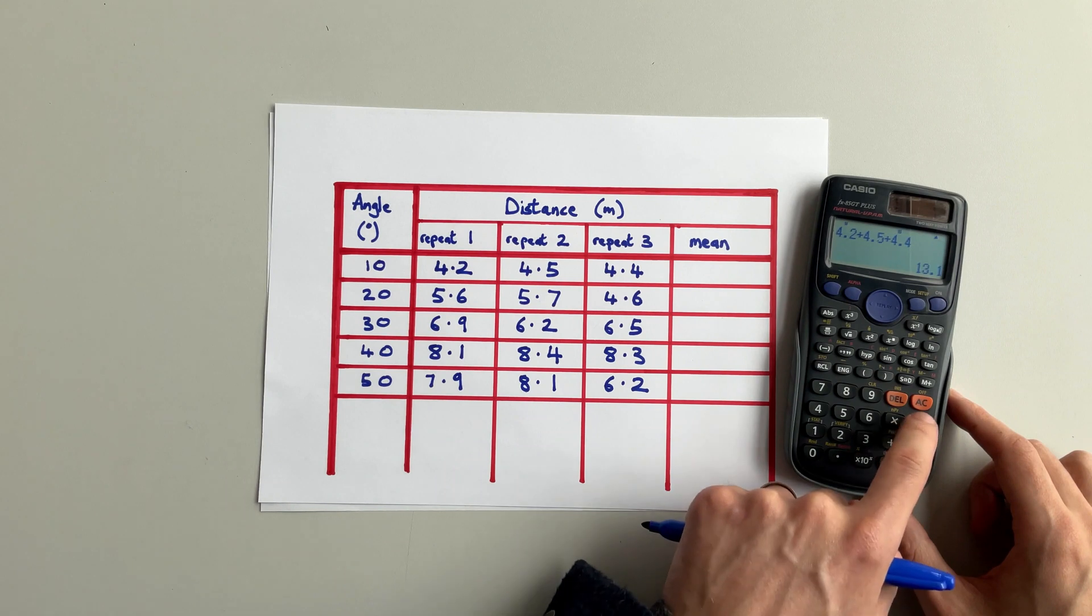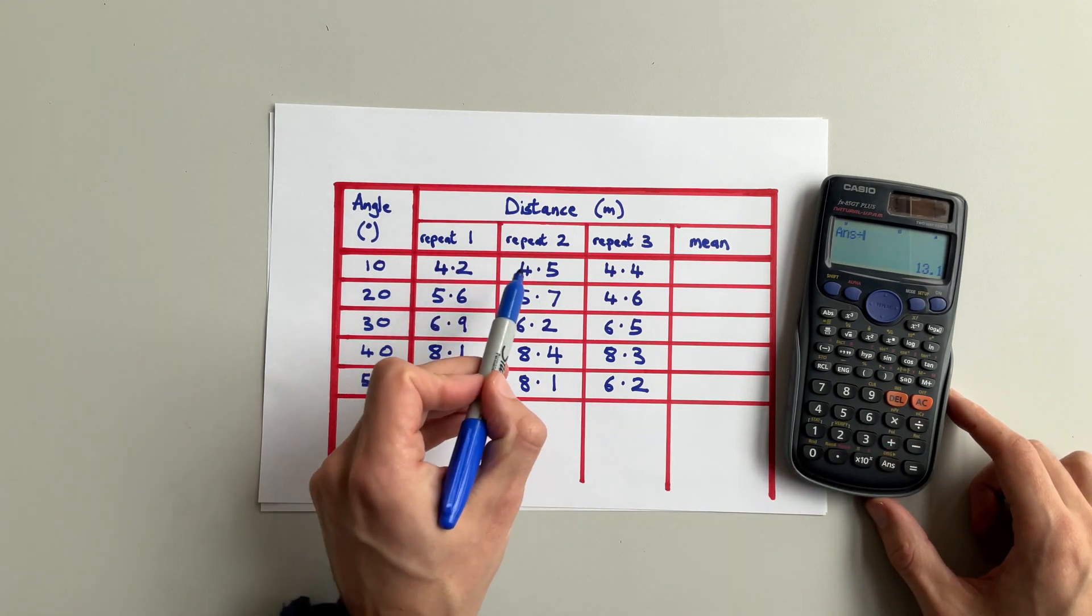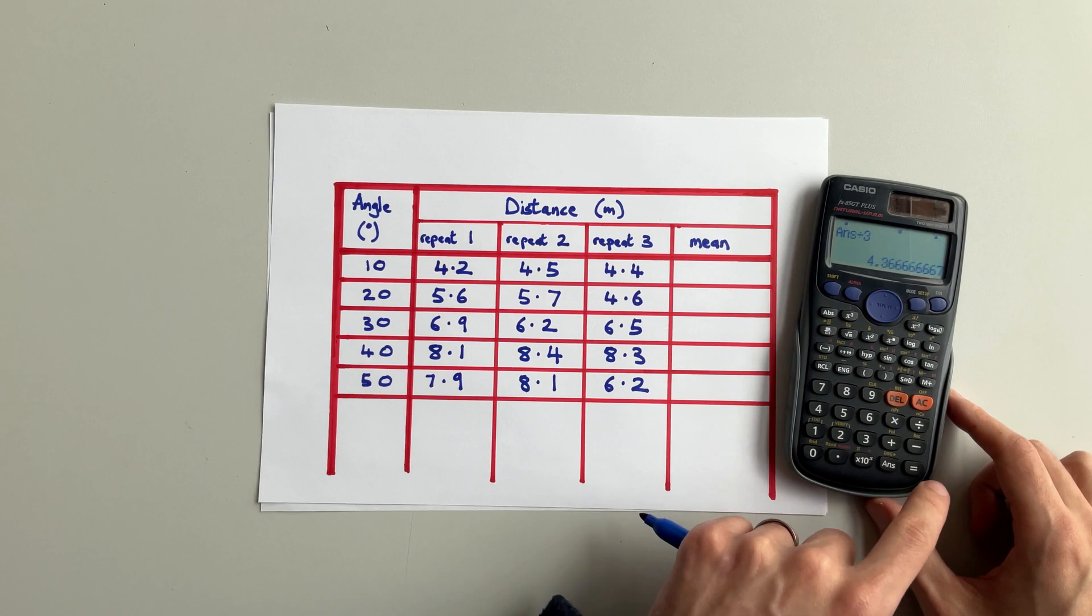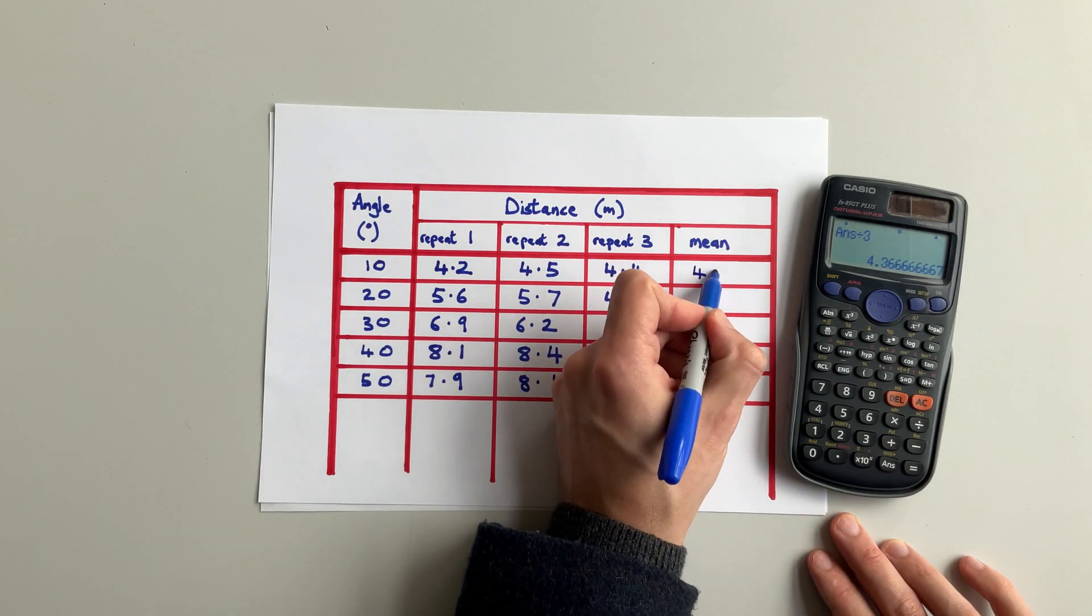So I'm going to add these all together, push equals and then divide by how many numbers there were. And that was three. That gives me a mean value of 4.4.